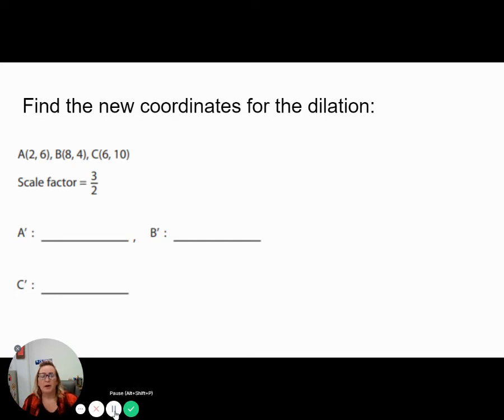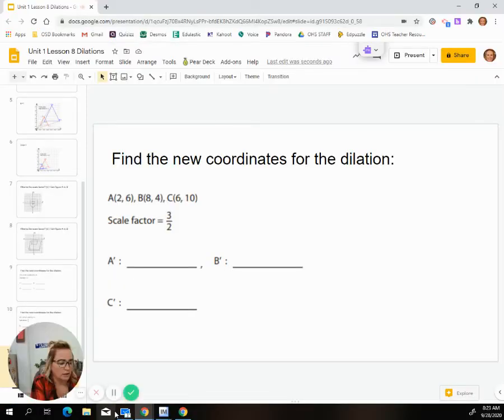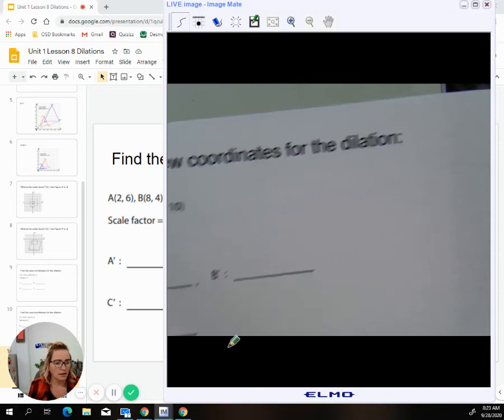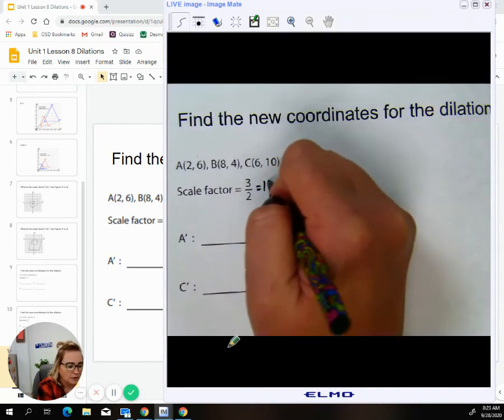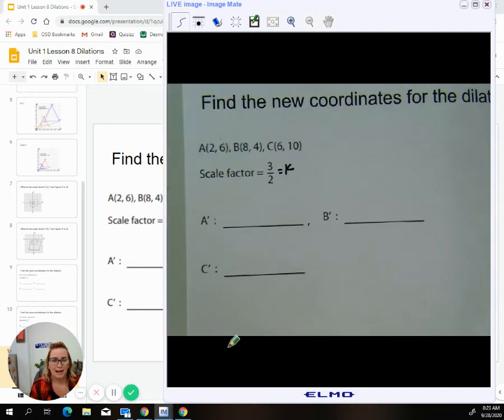So the last one we're going to practice with is a fraction, but it is a number that is greater than one. So it is going to present an enlargement, but I just kind of want to go over with you how to multiply when you're dealing with a fraction. So I'm going to pull it up on this other screen again. Again, remember, this is our K value, and we have to multiply everything by it.